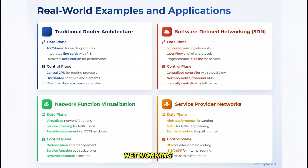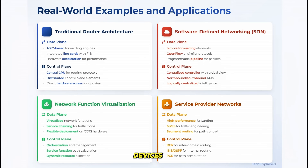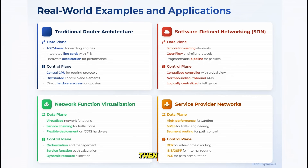Software-defined networking, or SDN, takes this separation to the extreme. In SDN, the control plane is completely removed from individual network devices and centralized in a controller. This controller has a global view of the entire network and makes all the routing decisions, then pushes down forwarding rules to the data plane elements, which become simple packet forwarding devices.